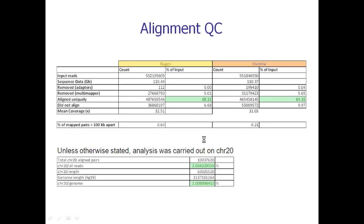One of the most informative parameters is just the proportion of reads that can uniquely align to the genome. In this quadrant I've got the NuGen data, and here I'm showing the Illumina data. There's 110 gigabases of raw data here, and in total 88 percent of the reads aligned uniquely, which is quite high — in my opinion anything over 80 percent is generally pretty good. For Illumina it's actually a little bit lower for this particular data set. Most of the reads that did not align uniquely either did not align or just aligned into multiple positions.